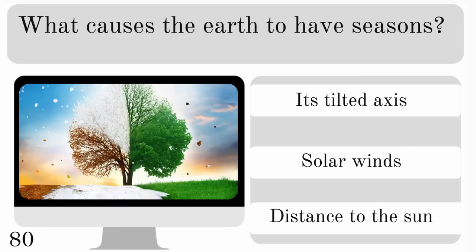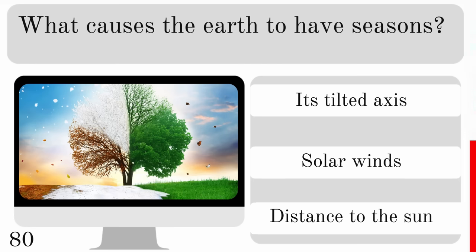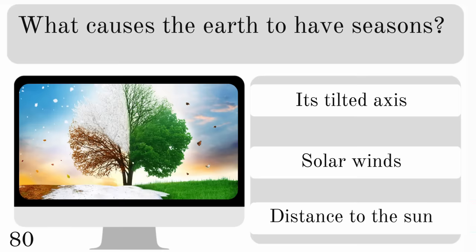What causes the Earth to have seasons? Is the correct answer its tilted axis, solar winds or the distance to the sun? The answer is its tilted axis.